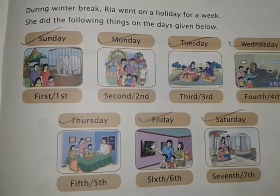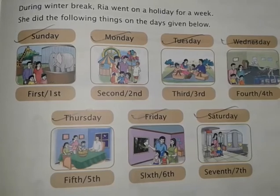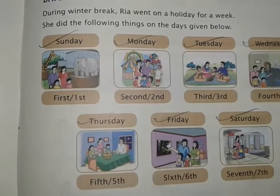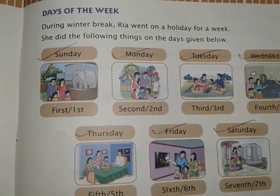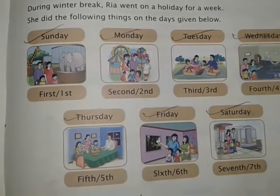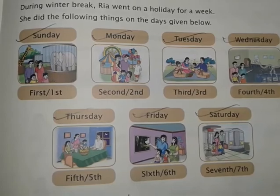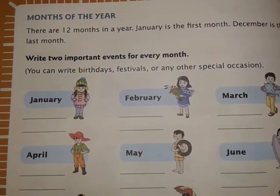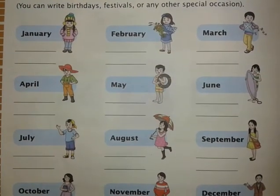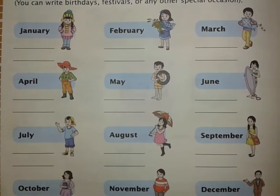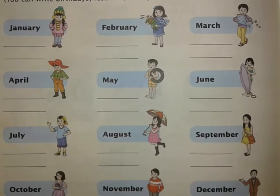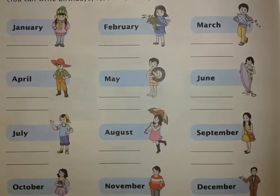If you find it difficult to write the names, or think you have forgotten the spellings, you can check from here. In the next page of your book, the days of the week are given starting from Sunday to Saturday — check and learn the spellings. Months of the year are also given on this page, starting from January to December. Check the spellings and revise — this will be required for doing this chapter. Goodbye children.